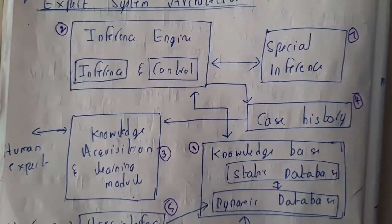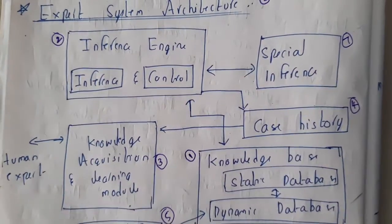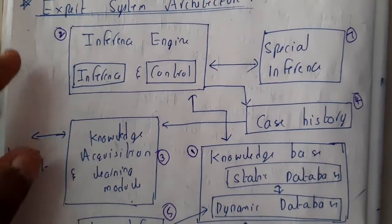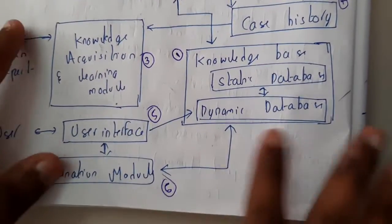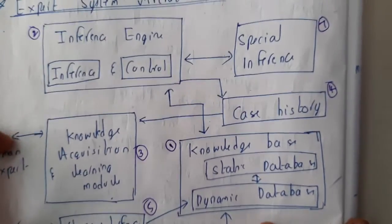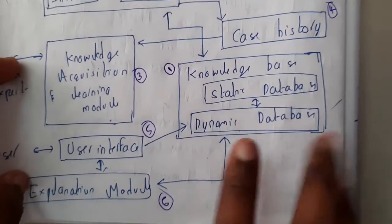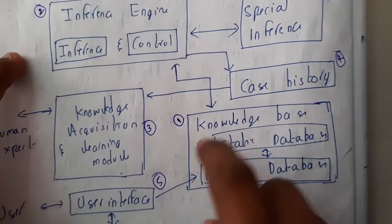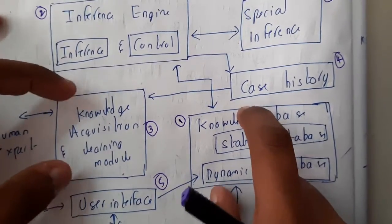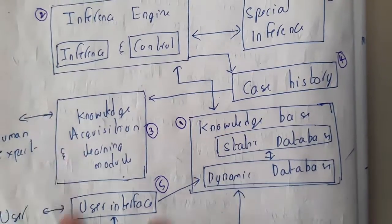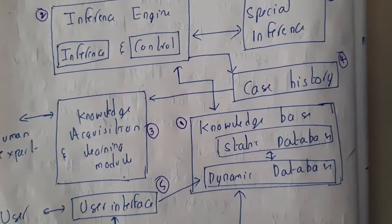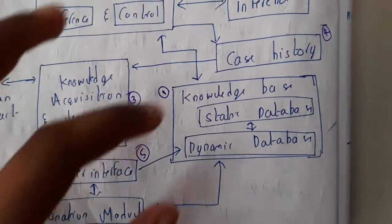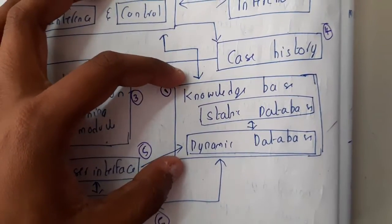Now let us go through expert system architecture. Some of you may have doubt about how to remember this whole diagram — it's a bit confusing. So I kept some numbers, and I'll be discussing in this order. If you remember in this order and connect them, that will be enough.